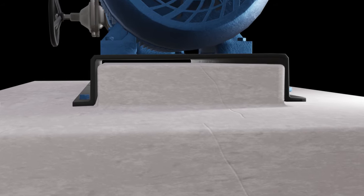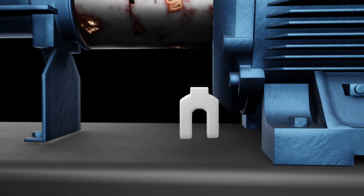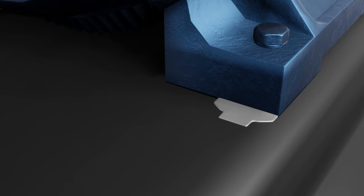Concrete bases can shrink, leading to gaps under the frame. Shims should be installed under the motor feet. They should be pulled back slightly, so the bolt's threads don't bend the shim when they are tightened.